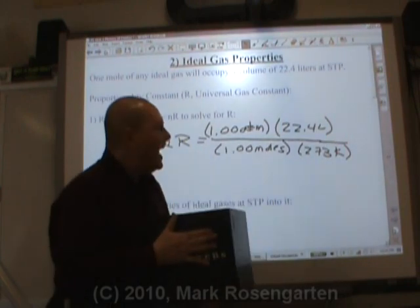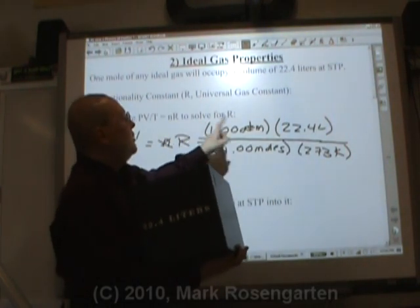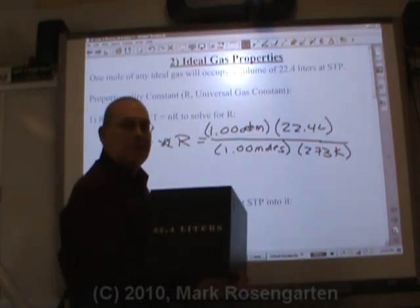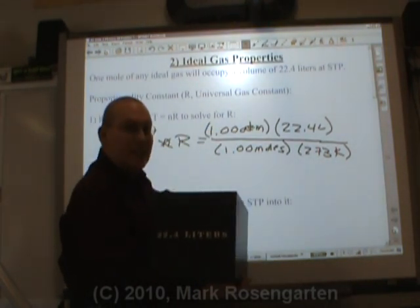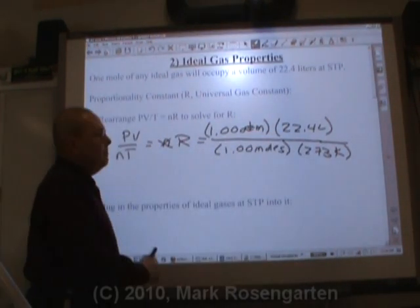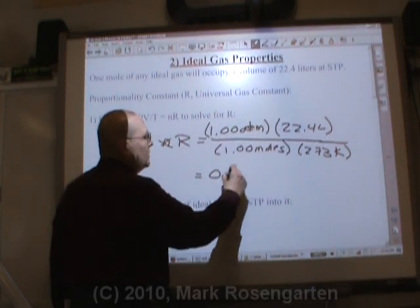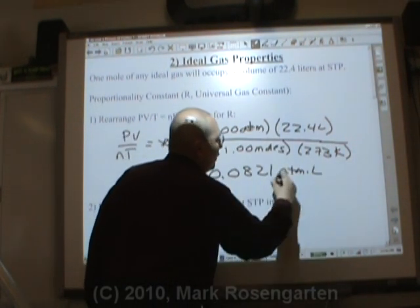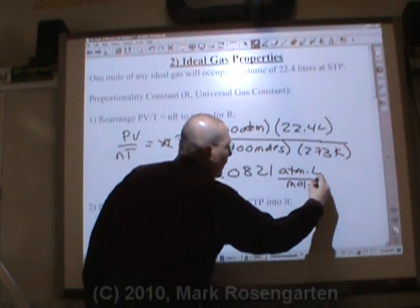So if we've got one mole of gas, and you're at standard temperature and pressure, the volume that that gas is going to expand to, assuming it's an ideal gas, 22.4 liters. When we do the math, we come up with 0.0821 atmosphere liter per mole Kelvin.